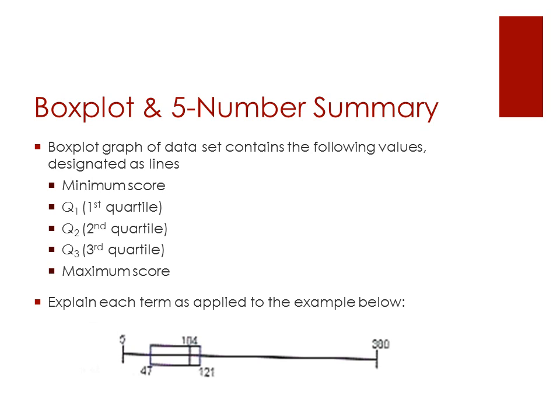In this section, we're going to be looking at box plots and how we represent them with a five-number summary. A box plot is a graph of data that contains specific values designated as lines, as we can see in the example below. As we go through each of these points, we're going to connect them down to the example.